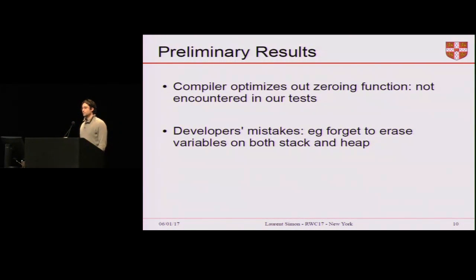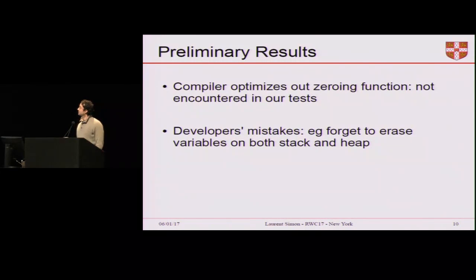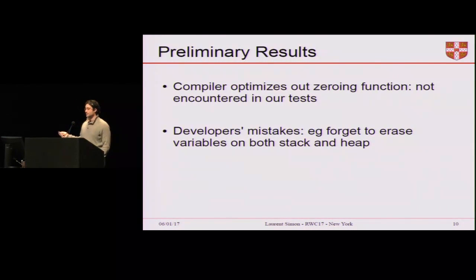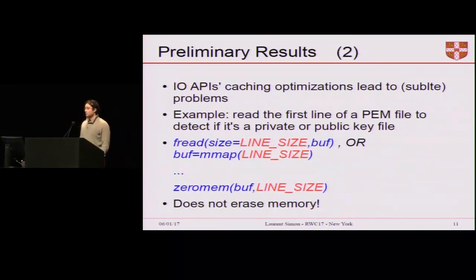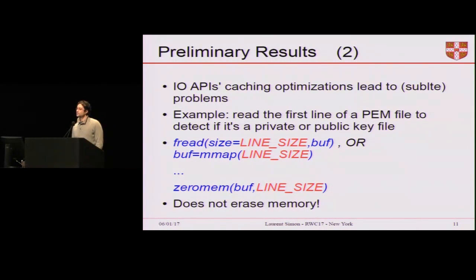In fact, most of the problems of data being left in RAM in practice actually boil down to programmer mistakes — for example, forgetting to erase a buffer on the stack or on the heap. More interestingly, we found that IO APIs tend to do caching, and that leads to subtle problems in practice.